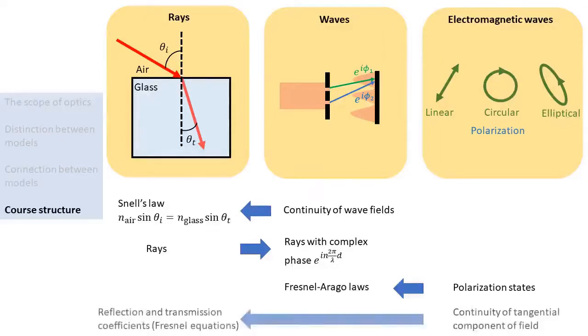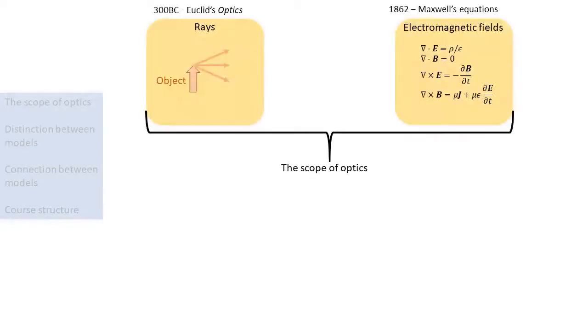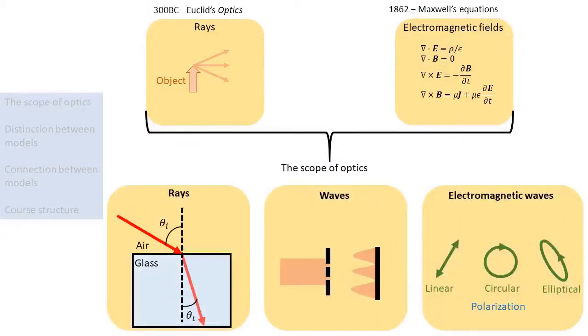These rules are called the Fresnel-Arago laws. So we see how polarization, which is due to the electromagnetic nature of light, affects the interference described by the wave model. We also saw that from the boundary conditions for the electromagnetic field, we can derive the reflection and transmission coefficients for light at an interface, given by the Fresnel equations. In conclusion, optics is a very broad field of study, ranging from tracing rays to solving coupled partial differential equations. To treat these different aspects in a structured manner, we identify three different models of light: the ray model, the wave model, and the electromagnetic field model. These models explain different physical phenomena and have different practical applications, yet at the same time they are closely interconnected and sometimes overlap.